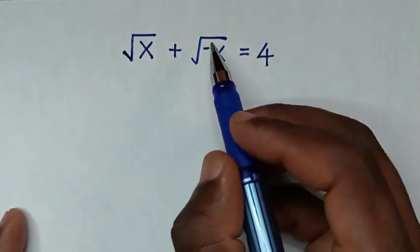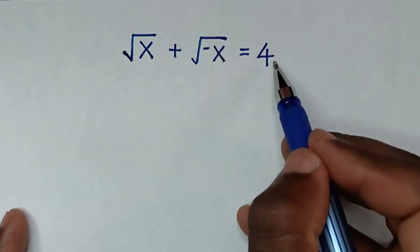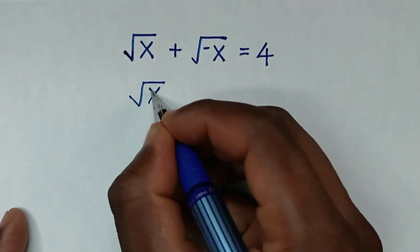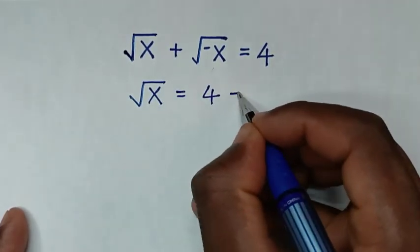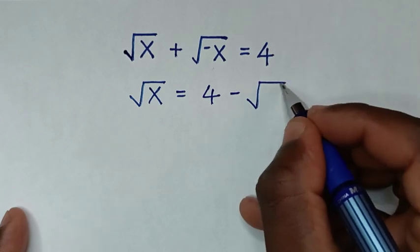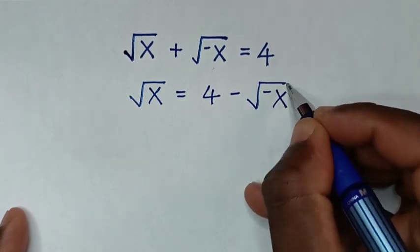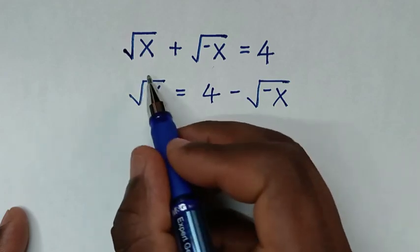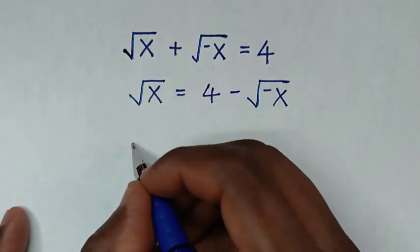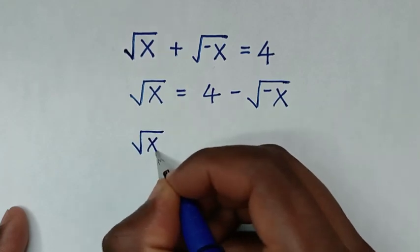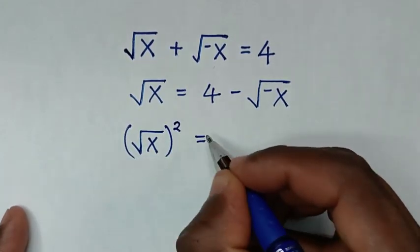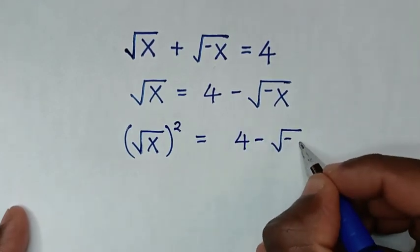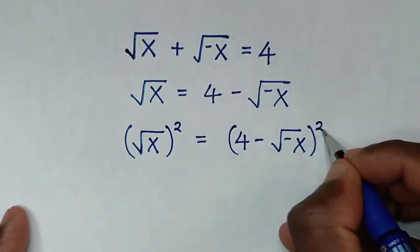In the first step we will take the square root of negative x to the right side. So it will be: square root of x is equal to 4 minus square root of negative x. Then to remove this square root we will square both sides: square root of x, bracket squared, is equal to 4 minus square root of negative x, bracket squared.